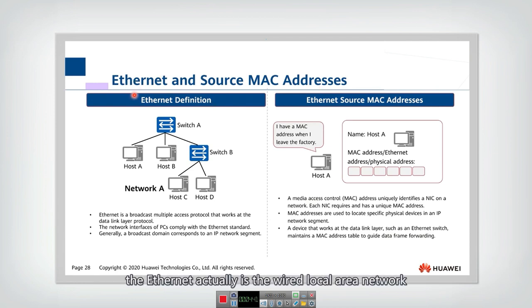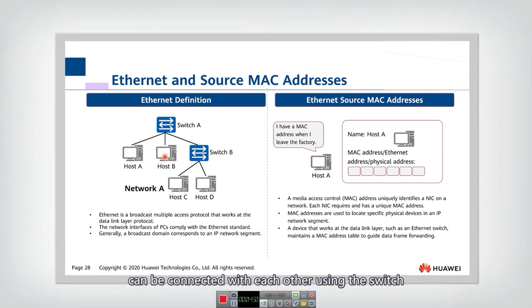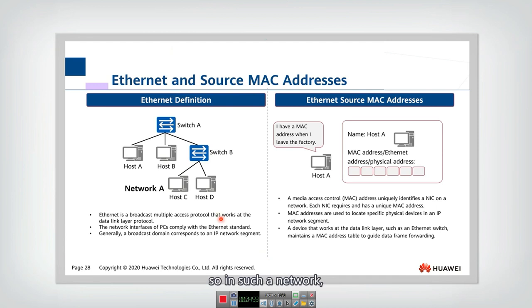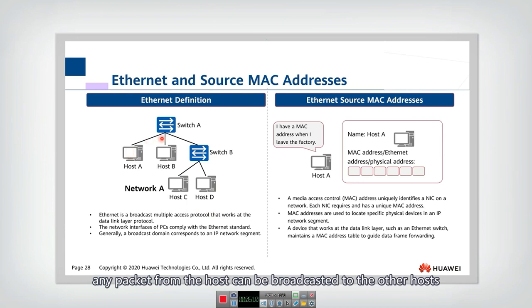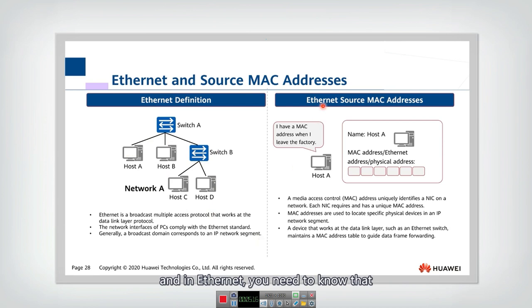For the link layer, one important concept is the MAC address, and a typical link layer protocol is Ethernet. Ethernet is the wired local area network. In Ethernet, computers can be connected with each other using a switch and finally connected to a router to connect to the internet. In such a network, this is a broadcasting network — any packet from a host can be broadcast to other hosts.